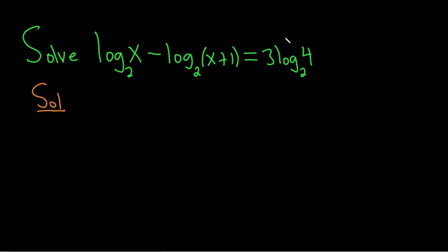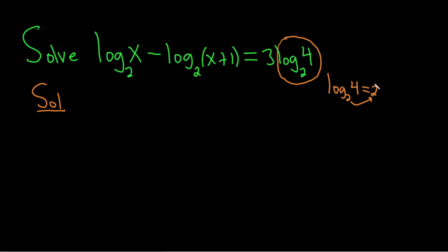First, notice that this over here is actually a number. In order to evaluate log base 2 of 4, you think: 2 to what power gives you 4? The answer is 2, because 2 squared equals 4. So this is 2, which means this is really 3 times 2, which is 6. So this whole right-hand side is just 6.